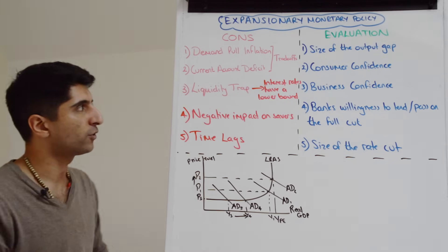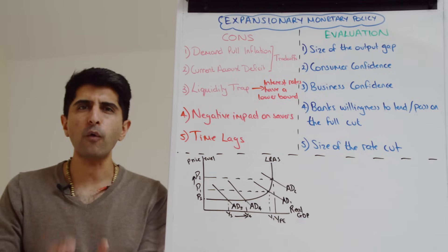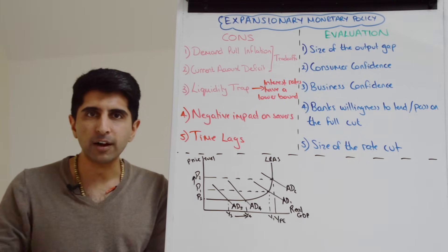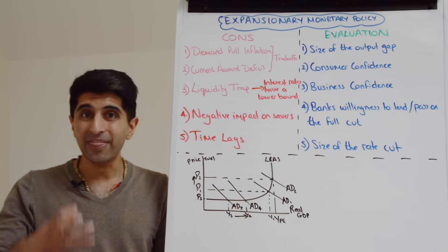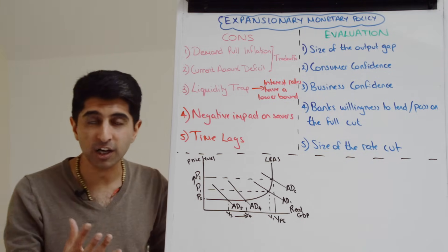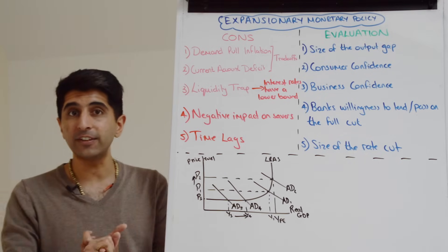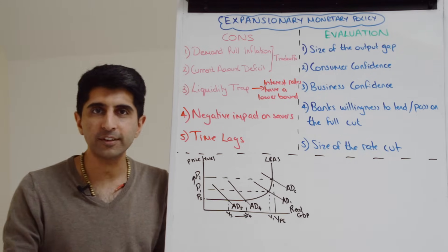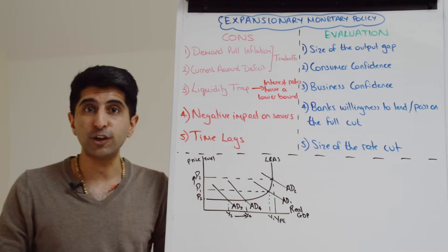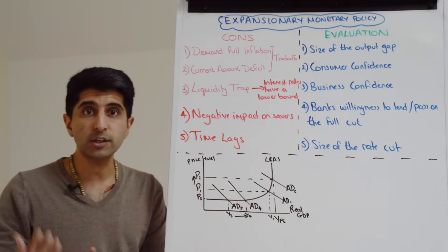The argument goes something like this: they argue that when interest rates are already so low they've hit their lower bound, then consumers and businesses out there in the economy have already converted their illiquid financial assets into more liquid assets like cash. So they've already converted all their bonds and other assets into cash, either to facilitate the spending on goods and services, or if you're a business to facilitate investment, or to hoard it because of lack of security, uncertainty about the future potentially, so you're hoarding it for security reasons.